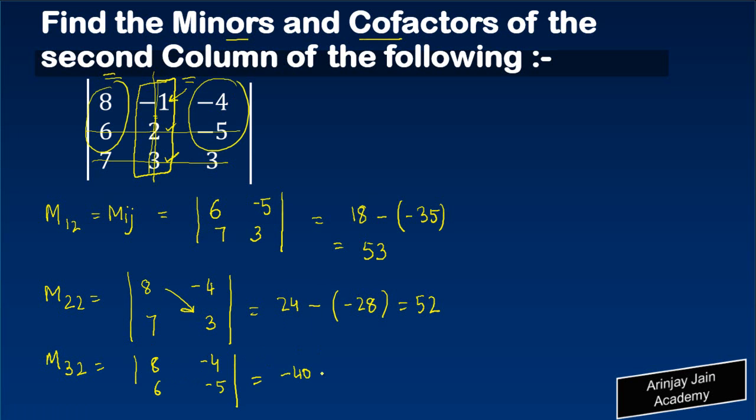What will be the value? 8 times minus 5 gives you minus 40, minus minus 4 times 6, which is minus 24. Minus minus becomes plus, this becomes plus 24, minus 40 gives you minus 16. So we have found out the value of minors of the second column.